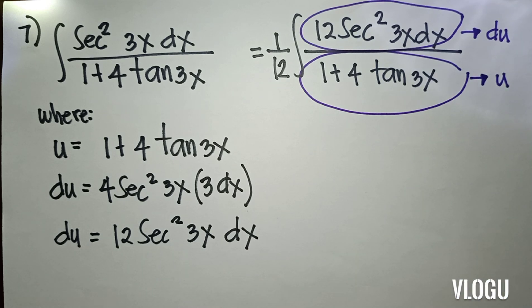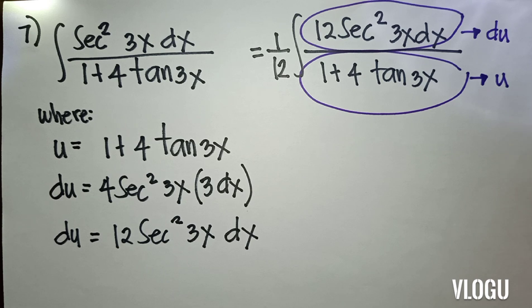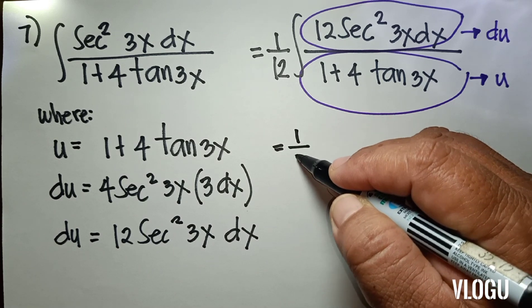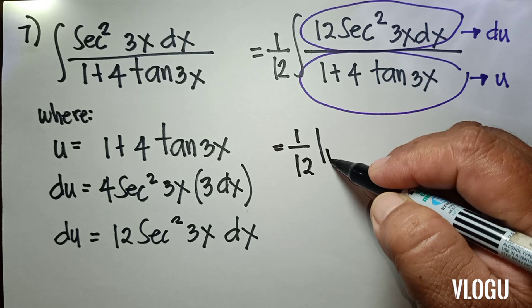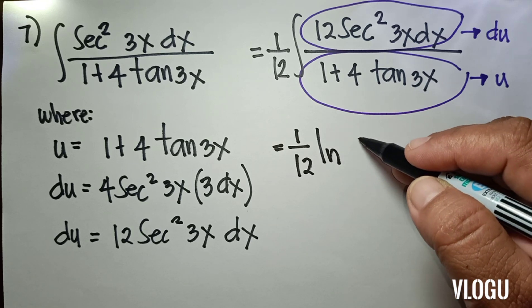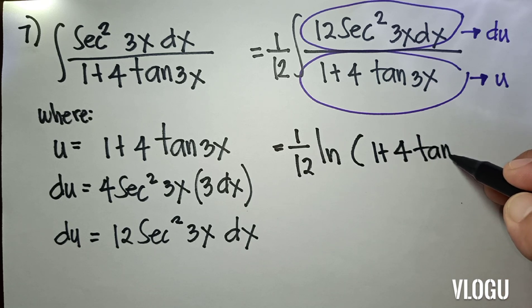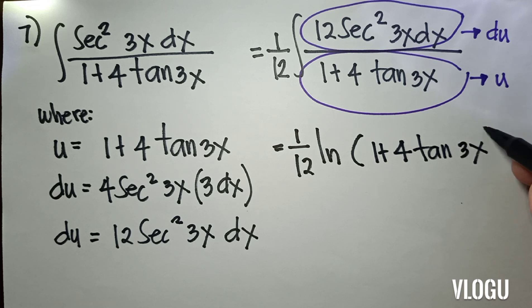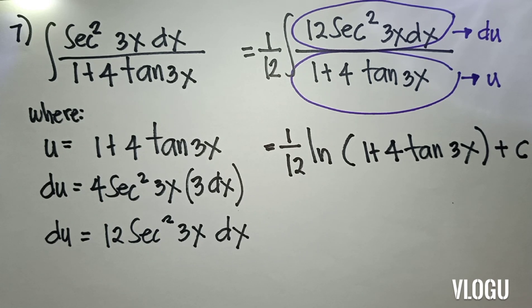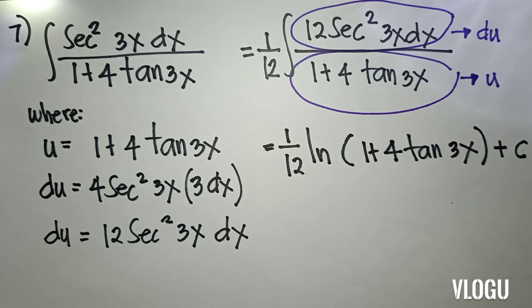The integral of du over u is equal to ln of u. So our final answer is 1/12 ln|1 + 4 tan(3x)| plus c.